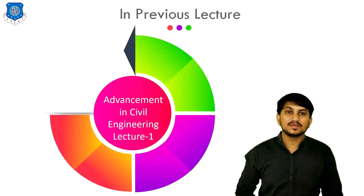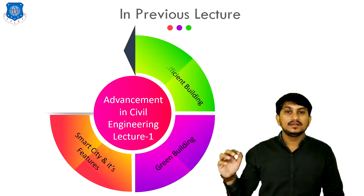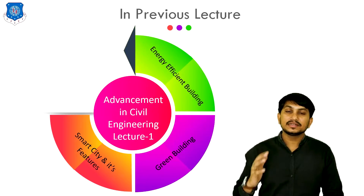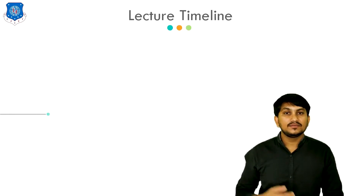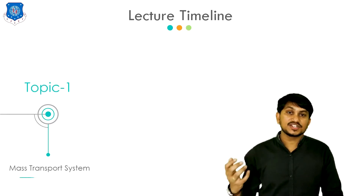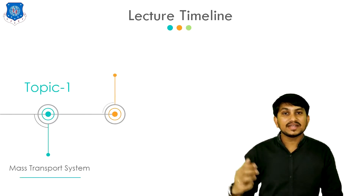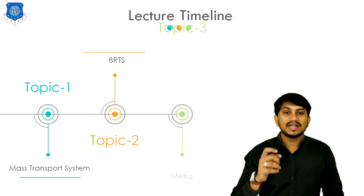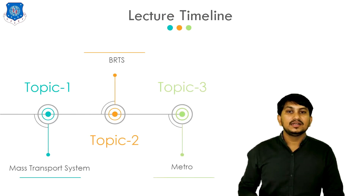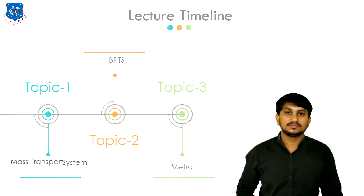In the previous lecture, lecture number one, we discussed three topics: Sparsity and its features, Green Building, and Energy Efficient Building. In today's lecture, we will cover first, Mass Transportation System; second, BRTS; and lastly, we will cover Metro. So without wasting much time, let's begin with Mass Transportation System.